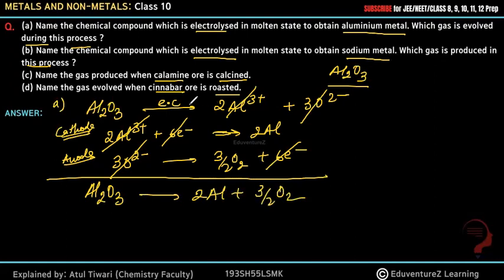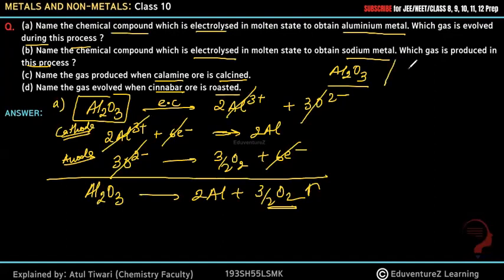So the reaction is occurring at the electrodes, and oxygen gas is evolved here. The compound being electrolyzed is alumina (Al₂O₃). Answer: The chemical compound is alumina (aluminum oxide), and oxygen gas is evolved. That completes our first answer.